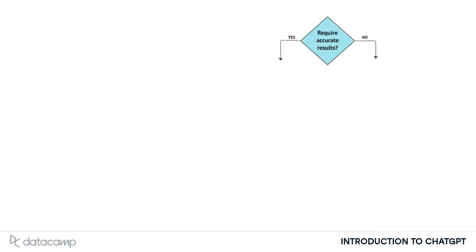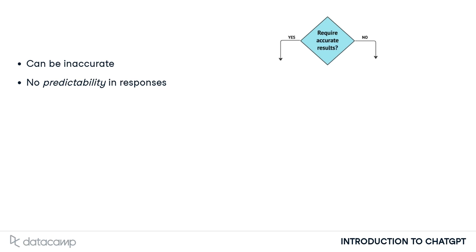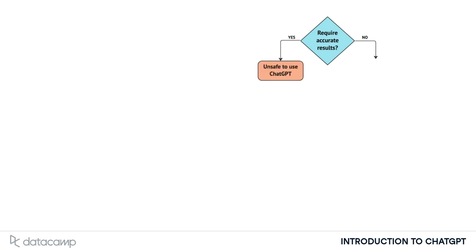The first question to ask ourselves is if we require a high degree of accuracy in the response. ChatGPT can be inaccurate and there's no predictability in its responses, so two people providing the same prompt often get different responses. If the use case requires certainty in the quality of the response, such as government policy advisory, ChatGPT would be an unsafe option.